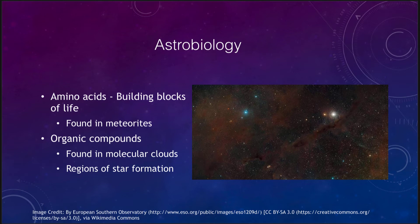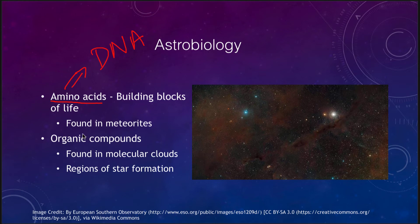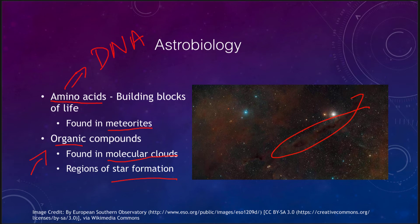Let's look at what we mean by astrobiology — the biology of astronomy. One of the things we talk about are amino acids. Amino acids are the building blocks of life. They make up our DNA, which is inside each of our cells and tells everything about a living creature. Amino acids are very common — they are found in meteorites, and other organic compounds are found in molecular clouds, dark regions where we can actually detect the emissions of organic compounds. We know that organic compounds form very easily in regions of star formation, leaving the possibility that they could become parts of newly forming planets.